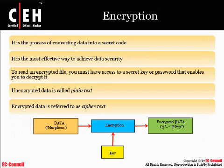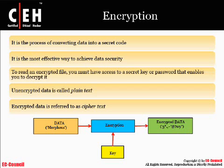Encryption is the process of converting the data. It's an effective way to achieve data security. To read an encrypted file, you must have access to the secret key or password that enables you to decrypt it. The unencrypted data is called plain text, and the encrypted data is referred to as cipher text.